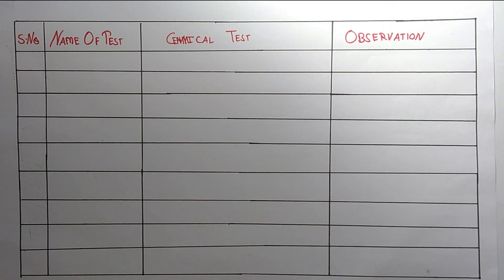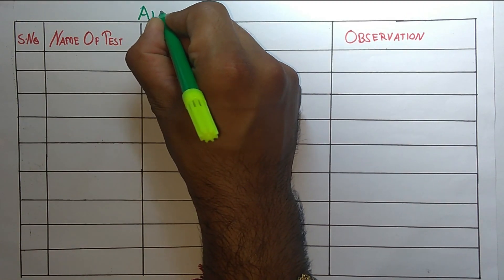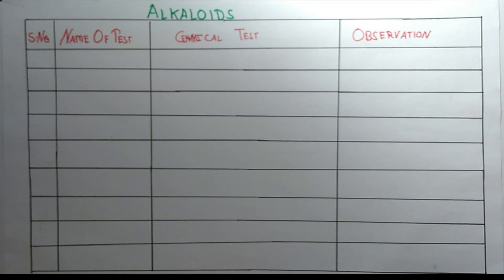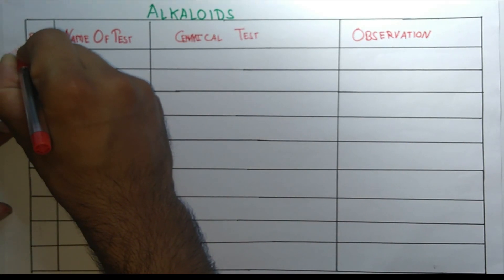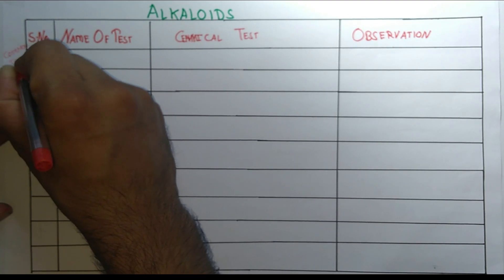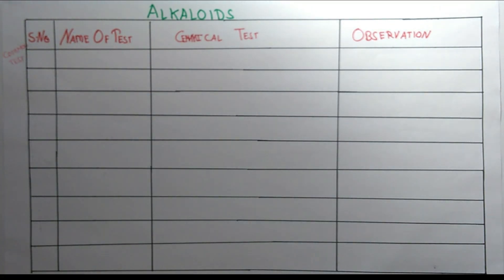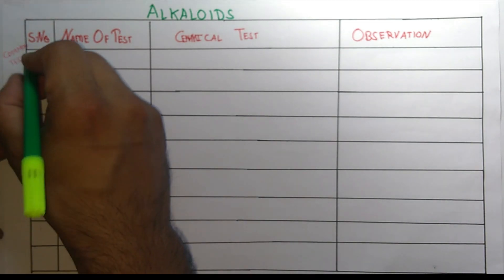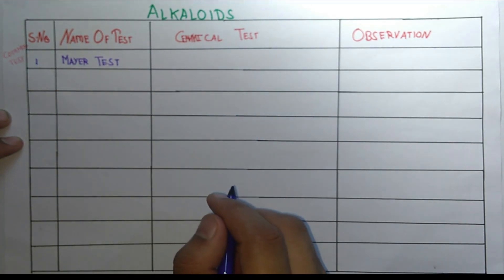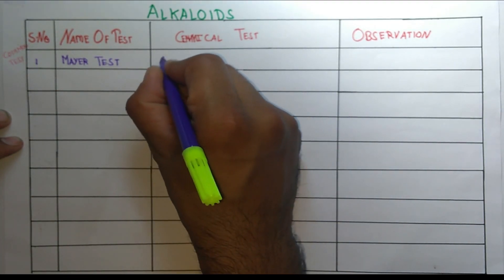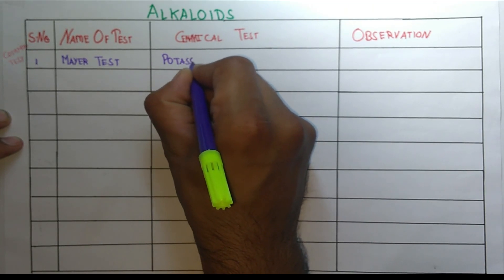Hello students, welcome to the channel Pharma For You. Today in this video we are going to talk about the chemical tests for the alkaloids. This is divided into two types: common tests and specific tests. In common tests, the first one is Mayer's test, in which we use potassium mercuric iodide.